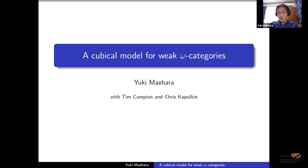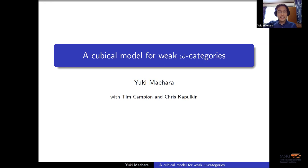I'll be talking about this cubical model for weak omega categories. Brandon told us about the strict cubical categories and went through the theta business, which was nice and elegant, but I need the direct comparison between the cubical and globular. So I'll start by defining the co-cubical object in omega-cat, which you use to get the direct comparison between the globular and cubical.